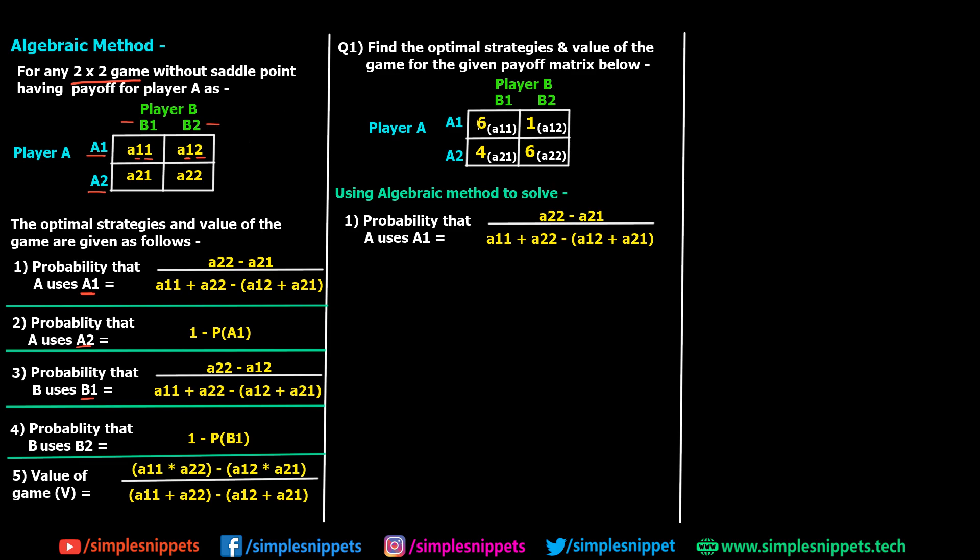Then you use algebraic method or odds method. Odds method we'll see in the next video also. Right now we've just taken a direct 2 cross 2 matrix because we just want to focus on this algebraic method. Using the first formula, probability that A uses A1, directly applying the formula, there is no extra work, just using this formula. I've already named the cells just for reference; in the numerical you won't be given this.